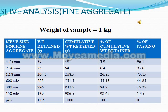Sieve Analysis for Fine Aggregate: Weight of sample 1 kg. Sieve sizes: 4.75 mm, 2.36 mm, 1.18 mm, 600 microns, 300 microns, 150 microns, Pan.